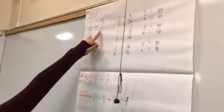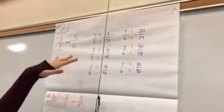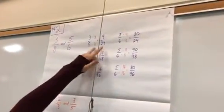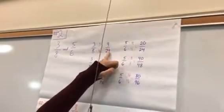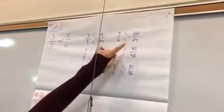So we found the least common denominator between eight and six was going to be 24. So we multiplied each by, this one by three and this one by four, to get nine out of 24 and 20 out of 24.